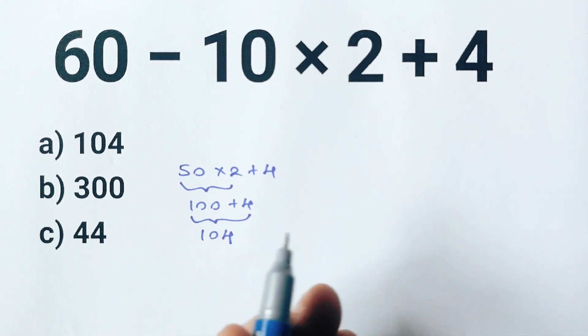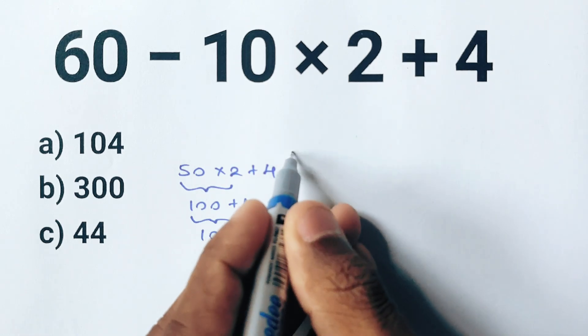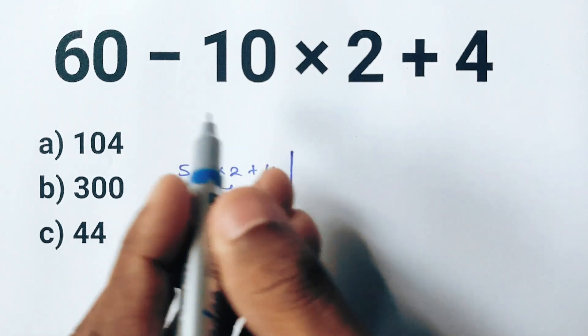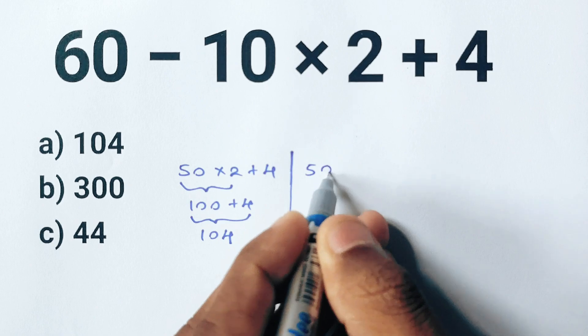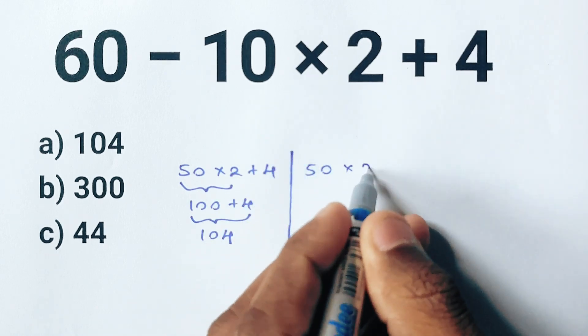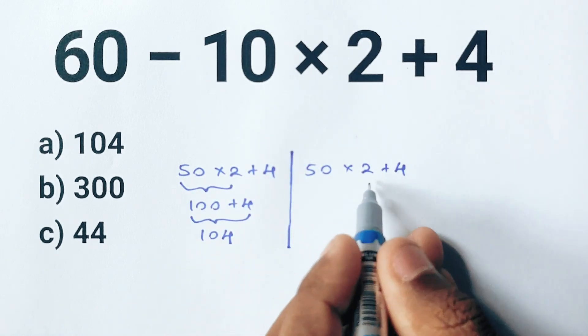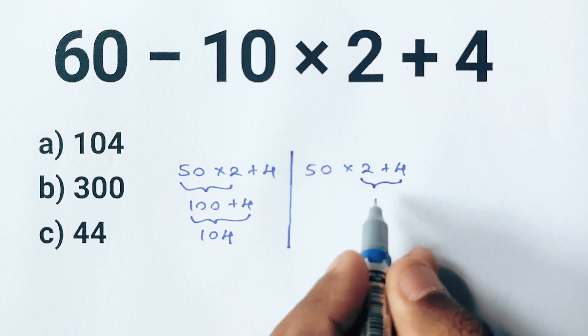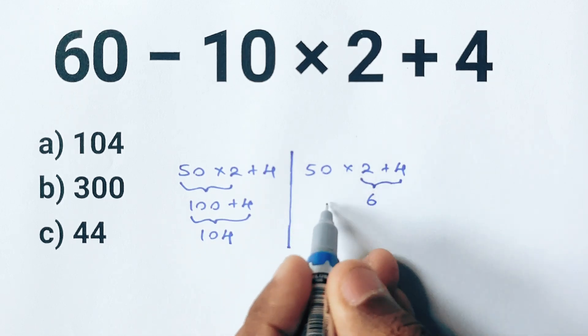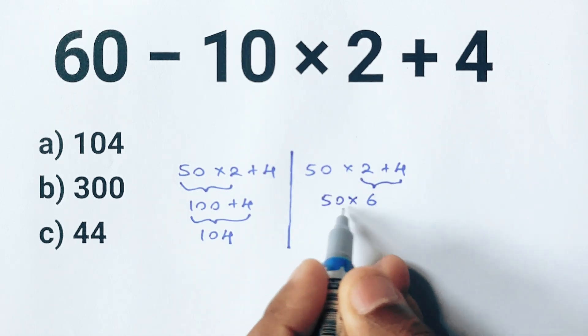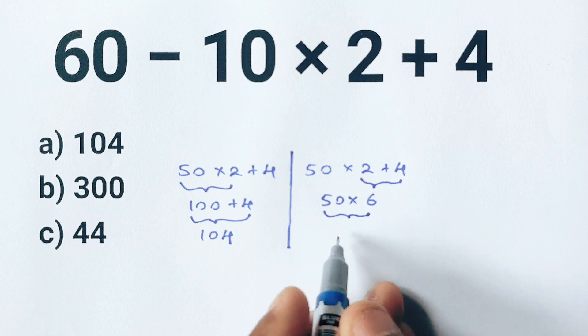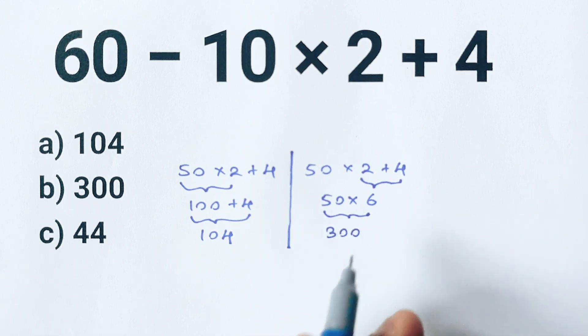Now someone else might approach it a little differently. They might start with 60 minus 10 which gives 50, then add 2 and 4 to get 6, and finally multiply 50 by 6 and that gives 300. Now they would get a totally different answer: 300.